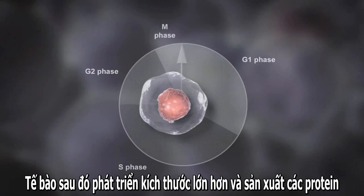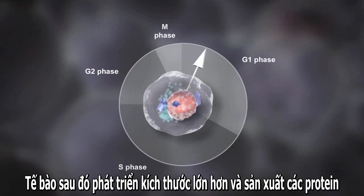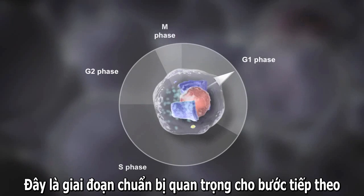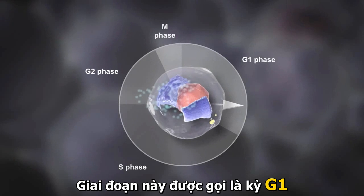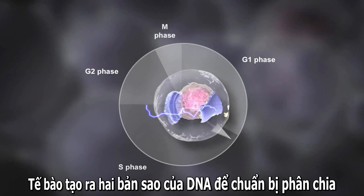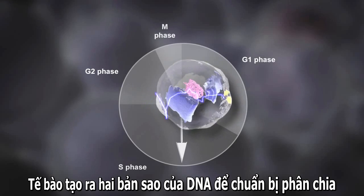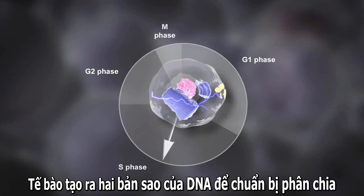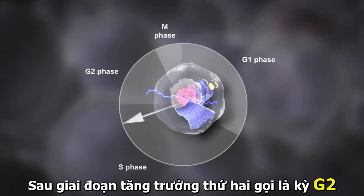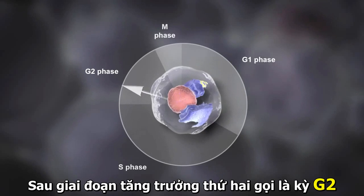The cell then grows larger in size and makes proteins, which are important for the next step. This phase is called G1. The cell then creates two copies of its DNA in preparation for dividing. This is called the S phase.